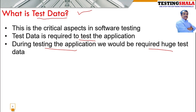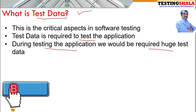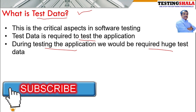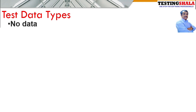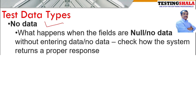We run different combinations of test data in order to test the application — to check whether the application is behaving correctly or not. We will have to put various types of test data to test the application. Now we will try to understand what are the various types of test data we normally use.